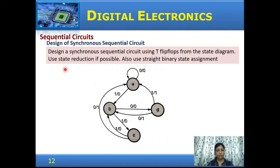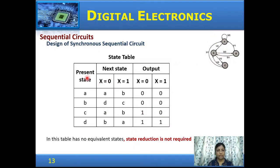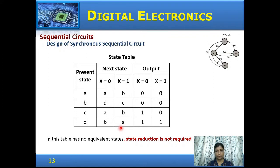Next problem: design a synchronous sequential circuit using T flip-flops from the state diagram, applying state reduction if possible, and using straight binary state assignment. Checking for equivalent states — states A and C have the same next states A and B, but their outputs differ (0,0 versus 1,0), so A and C are not equivalent. Therefore no state reduction is required.